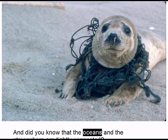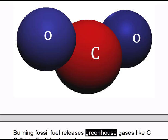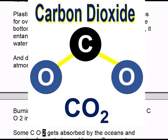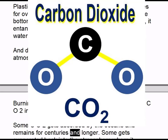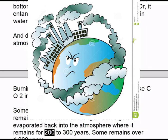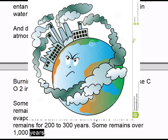The oceans and the atmosphere are tightly connected. Burning fossil fuel releases greenhouse gases like CO2 into Earth's atmosphere. Some CO2 gets absorbed by the oceans and remains for centuries and longer. Some gets evaporated back into the atmosphere where it remains for 200 to 300 years, and some remains over 1000 years.